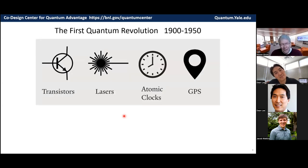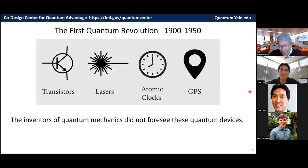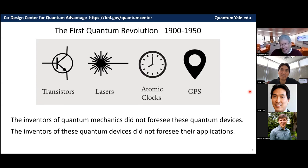And yet the theory of quantum mechanics gave us the technology revolution of the 20th century through the invention of the transistor, the laser, and the atomic clock, which led to the global positioning system. So this is a beautiful illustration of the benefits of fundamental research, which you get surprising applications from these seemingly obscure research topics. And the inventors of quantum mechanics did not foresee these practical quantum devices. And even the more practical people who invented these devices really did not foresee their applications.